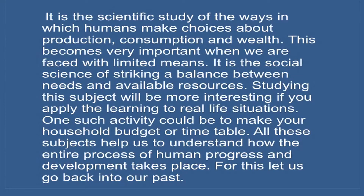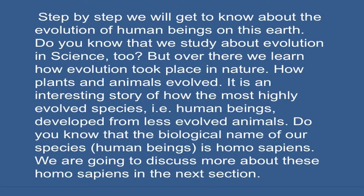History, Geography, Economics, Political Science and Sociology together help us understand how the entire process of human progress and development takes place. Let us go back into our past — step by step, we will get to know about the evolution of human beings on this earth. We study evolution in science too, learning how plants and animals evolved and how the most highly evolved species, human beings, developed from less evolved animals. The biological name of our species, human beings, is Homo sapiens.